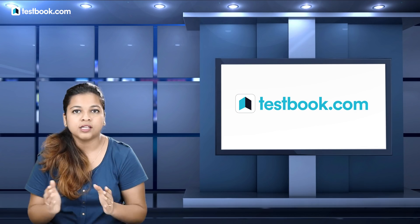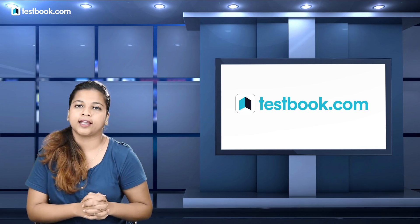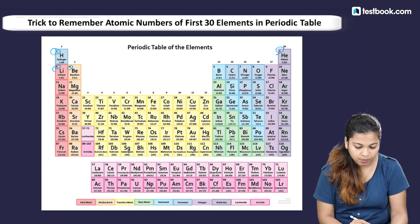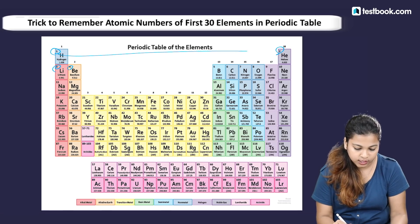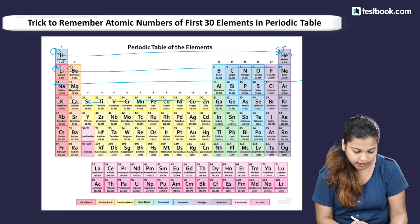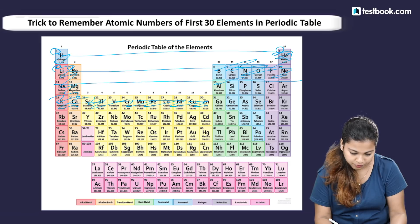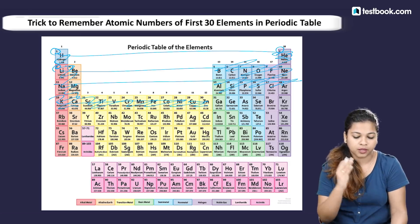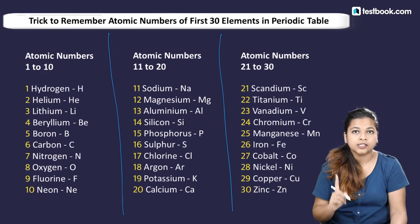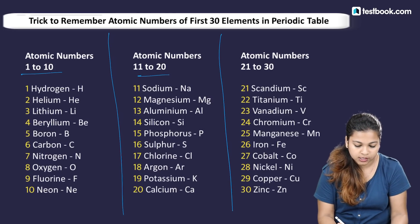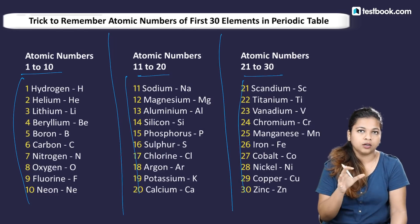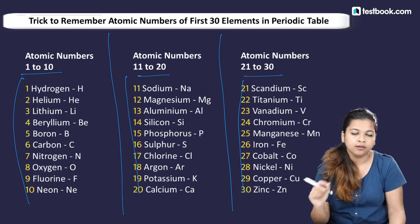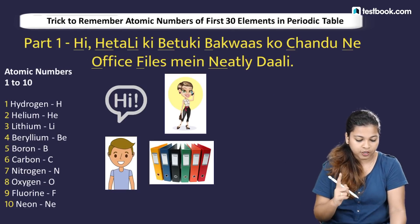First we will talk about how to remember the atomic numbers and the sequence of elements. As you can see on the screen, we will remember the first 30 elements' atomic numbers. We will do this in three parts: first 1 to 10, then 11 to 20, then 21 to 30, as shown on screen.